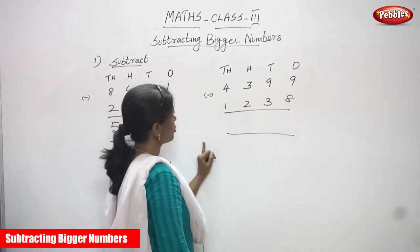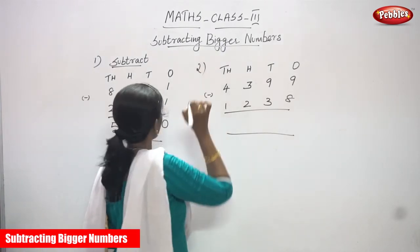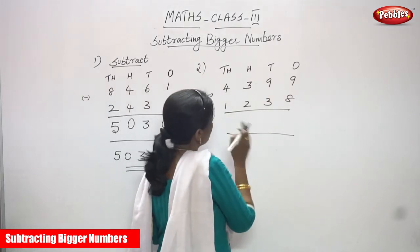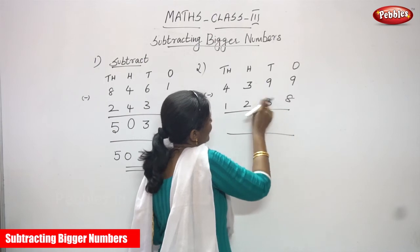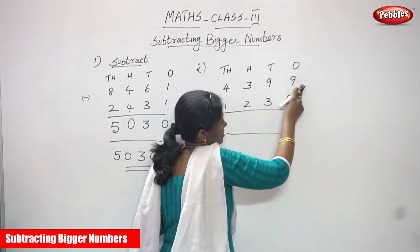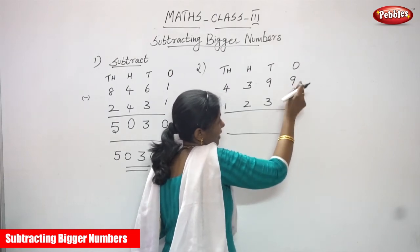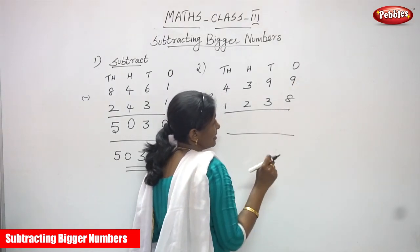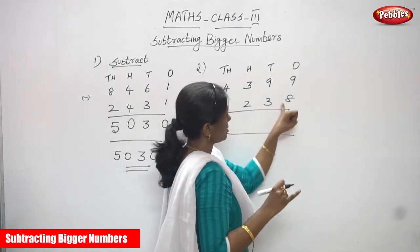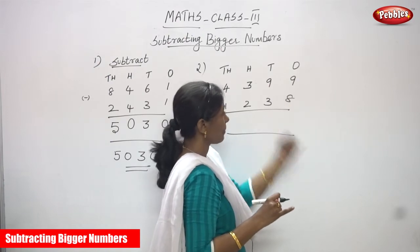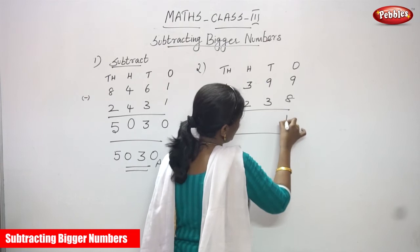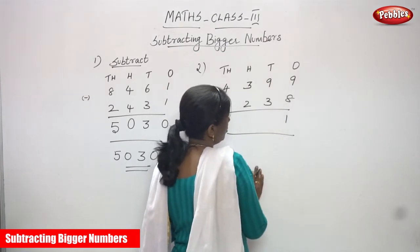Now I'm going to do the second sum. The first sum is over. Again it is also a 4-digit number — subtracting bigger numbers. 1s, 10s, 100s, 1000s. Starting with the 1s place: 9 minus 8. Start doing the backward counting after 8 — only 1 step, that is 9. So 9 minus 8 gives you 1.